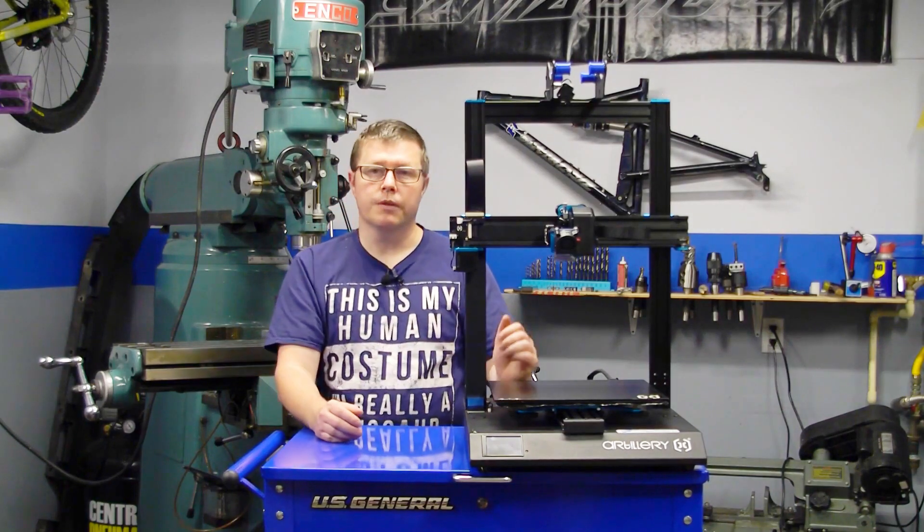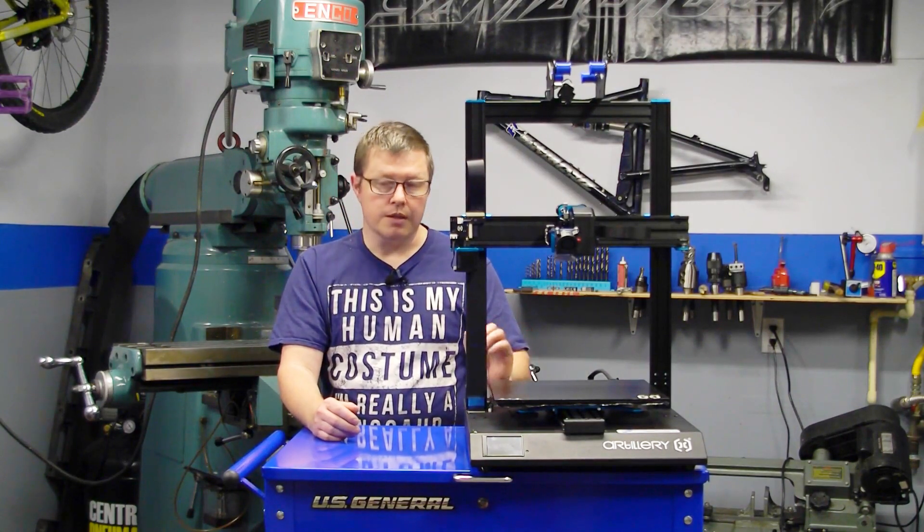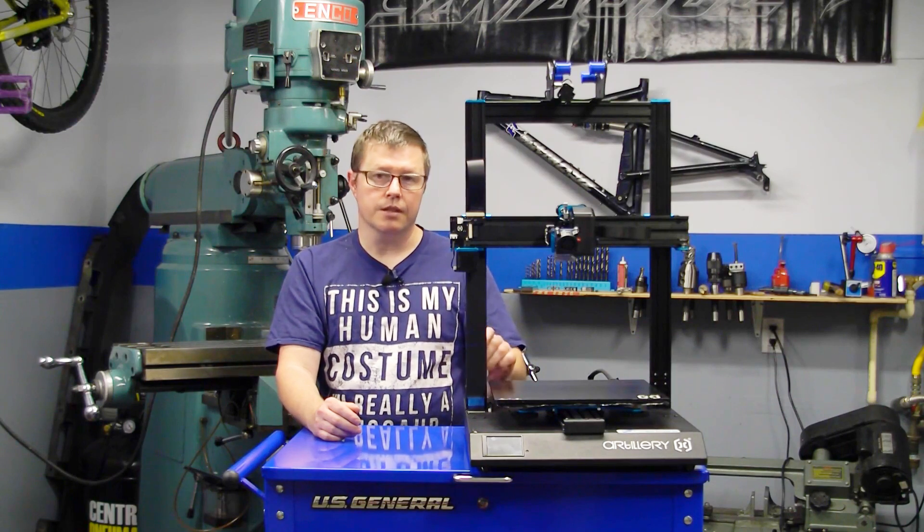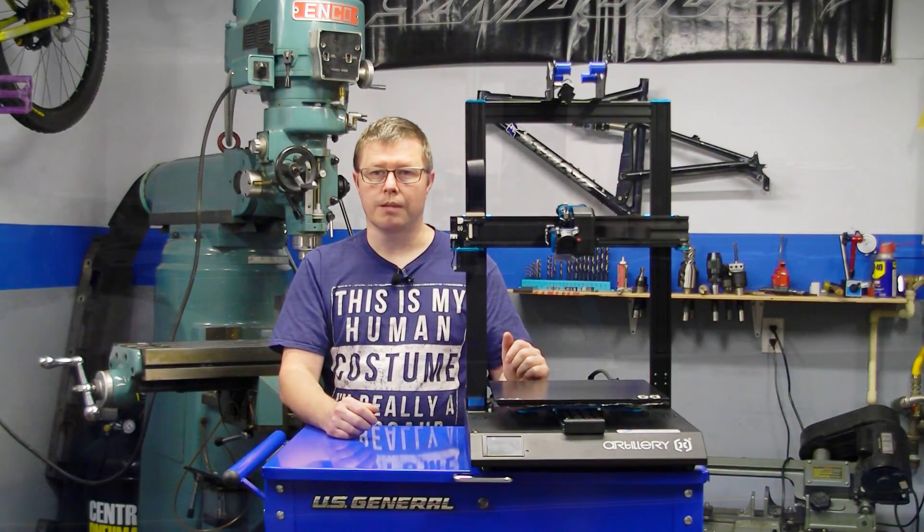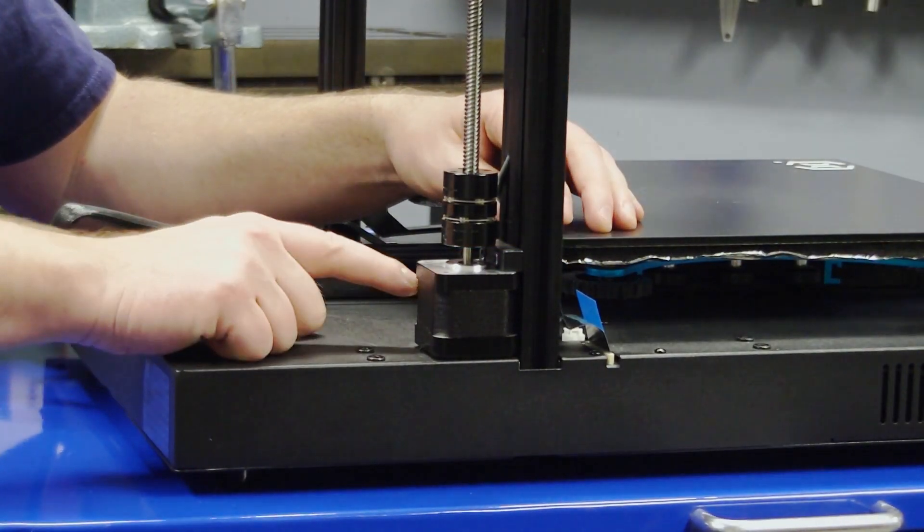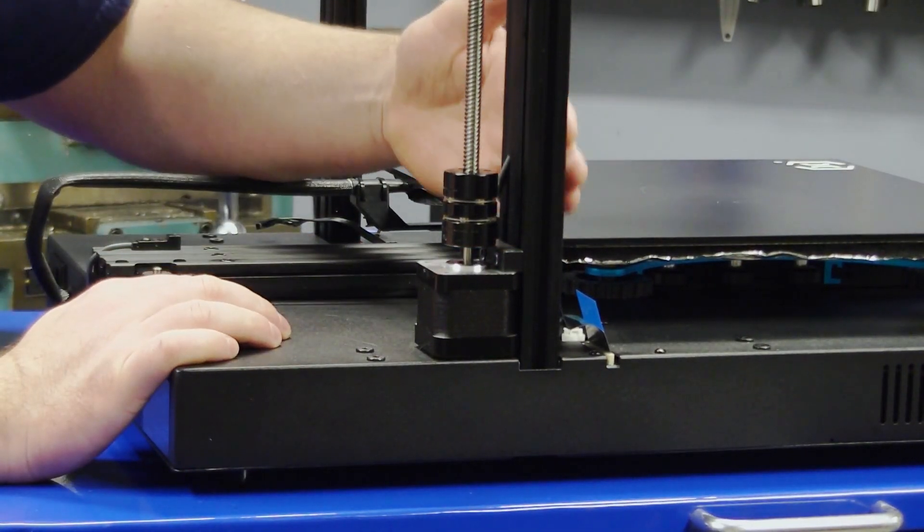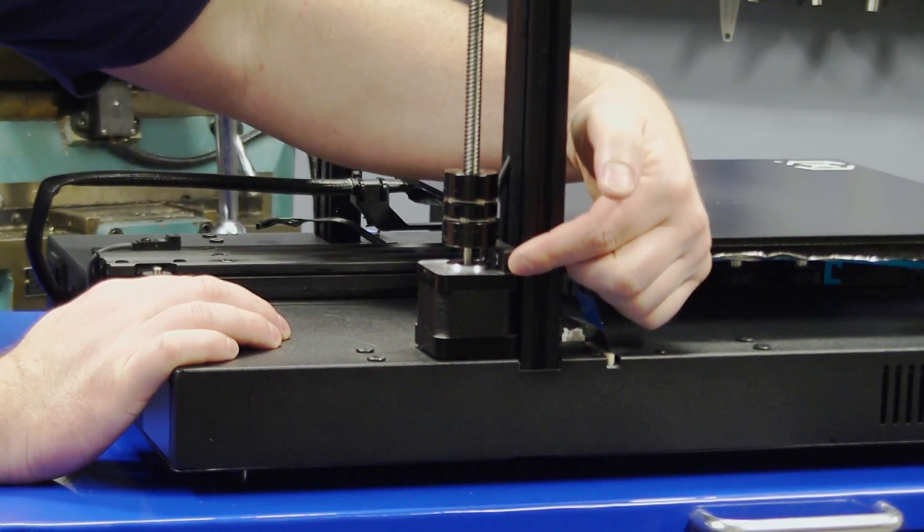So I spent some time looking over the machine and noticed that the stepper motors that drive the z-axis lead screws could be a good starting point. Let me bring you in closer and I'll show you what I'm talking about. If you look here, this stepper motor is attached only to the vertical leg of the gantry with a small aluminum bracket.